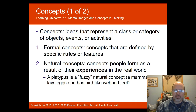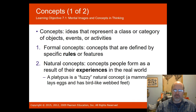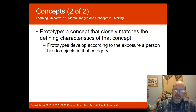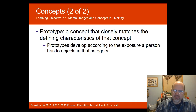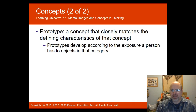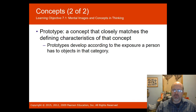The platypus is a fuzzy natural concept because it's a mammal that lays eggs and has bird-like webbed feet, so it doesn't fit our natural experience of what a mammal looks like. A prototype is a concept that closely matches the defining characteristics of that concept. Prototypes develop according to the exposure a person has to objects in that category, and concepts are dependent on experience and culture.